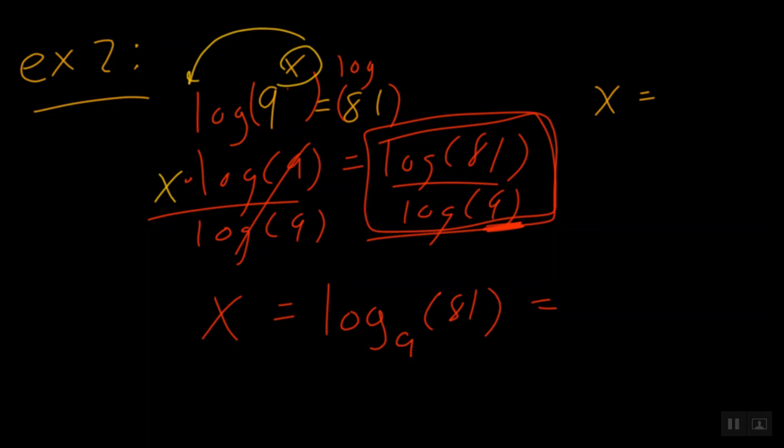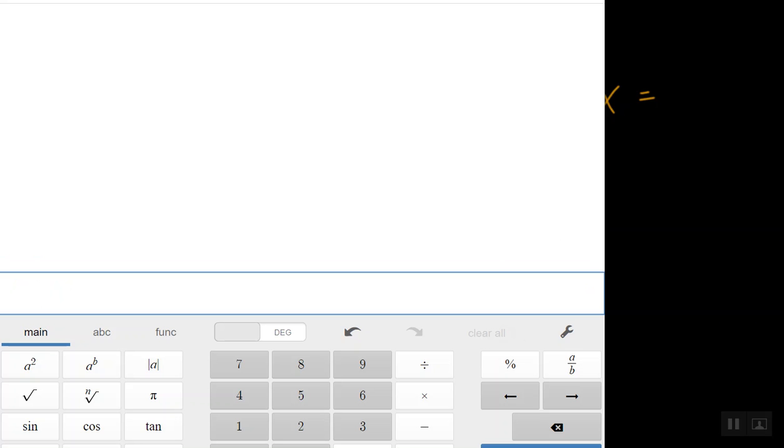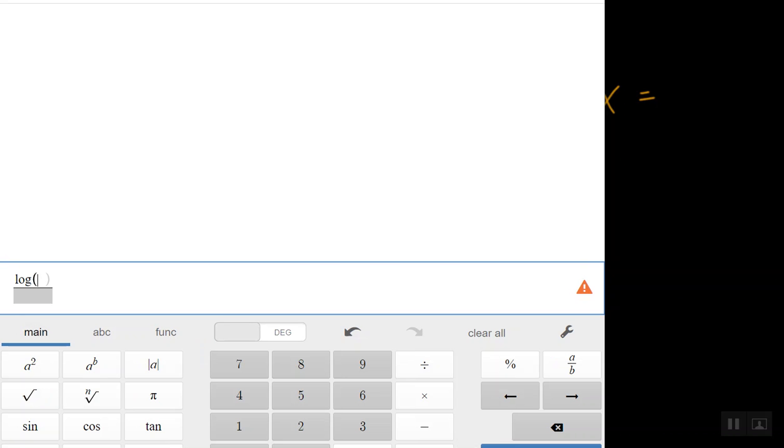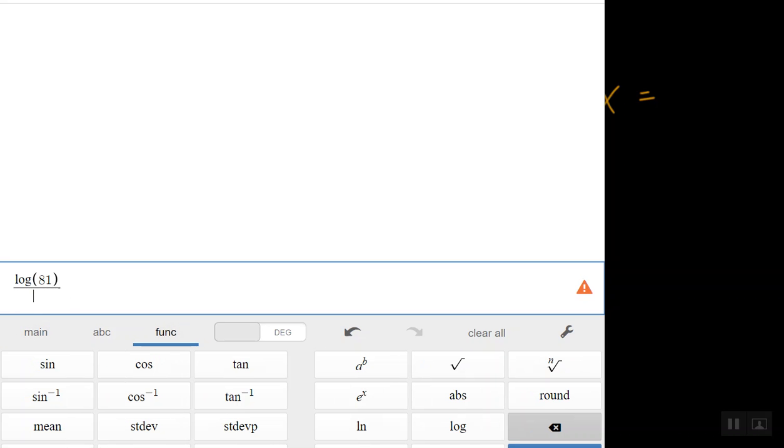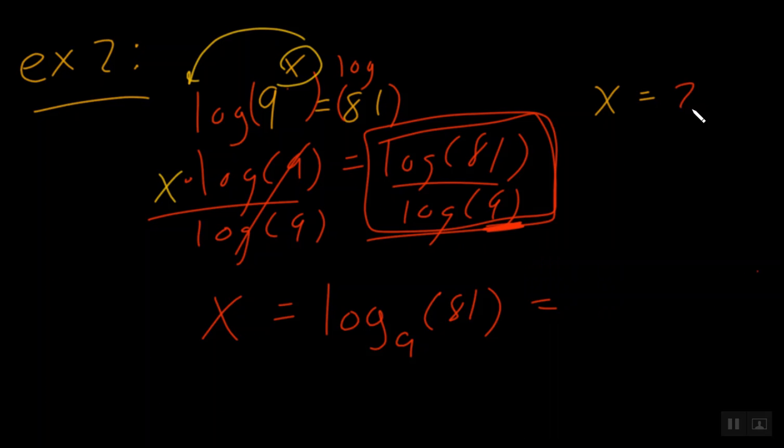So what is this going to equal? Well, we go back to our calculator. And I'm just going to practice this from the beginning. I click my A over B. I click my function. I click my log button. We're going to go back to main. We'll do log of 81, close parentheses, all over. I'll go back to my function. I'll take the log. Back to my main. Of 9. And we see that this is 2. Yeah, most of y'all probably guessed this was 2 originally. So x is equal to 2.